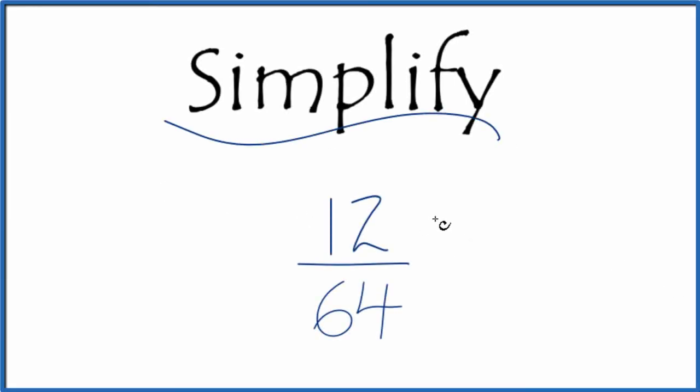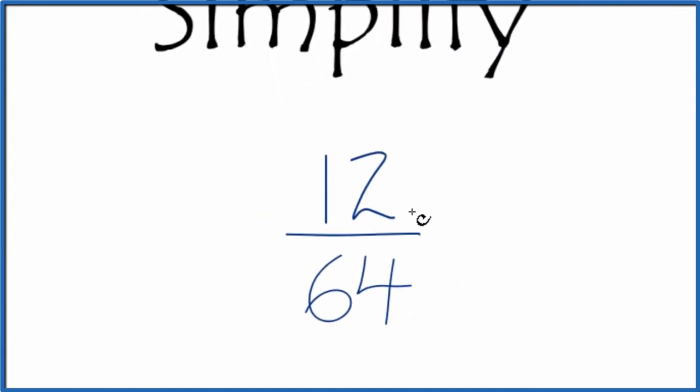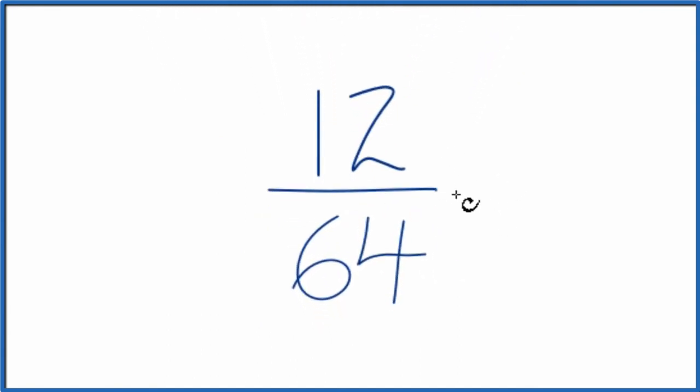Let's simplify the fraction 12/64. So to do that, what we need to do is find another fraction that has the same value, equivalent to 12 divided by 64, just reduced to its lowest terms.